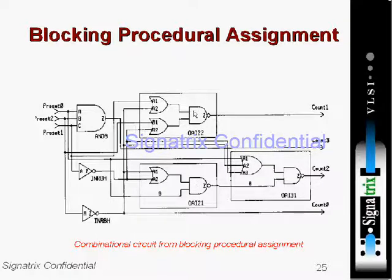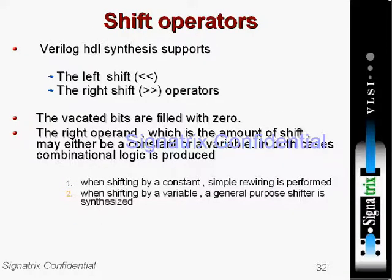As we understand what a blocking procedural assignment is, it is just a typical layout. When we look at the shift operators, Verilog HDL synthesis supports two operators: left shift and right shift. The vacated bits are all filled with zero. The right operand — the amount of shift — may be either a constant or a variable, and in both cases combinational logic is produced. When shifting by a constant, simple rewiring is performed; when shifting by a variable, a general purpose shifter is synthesized.